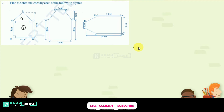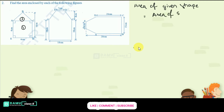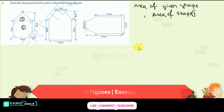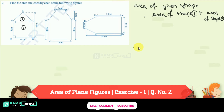Let's label this as shape 1 and shape 2. We need to add the area of both shapes. So, the area of the given shape will be equal to area of shape 1 plus area of shape 2 — that is, area of square plus area of triangle.